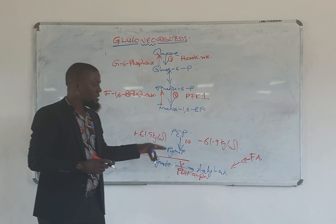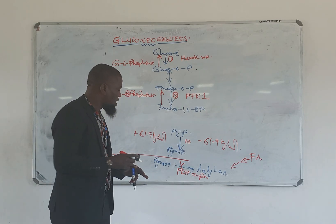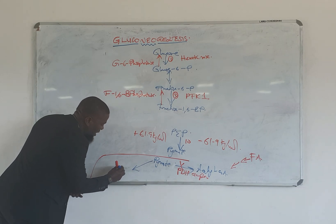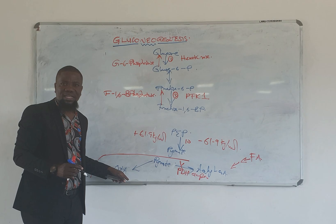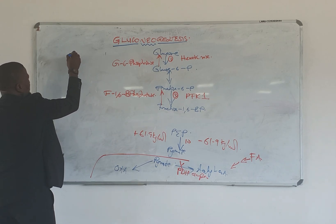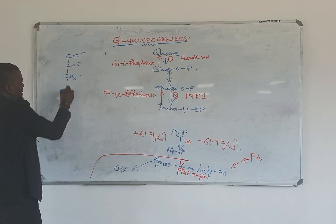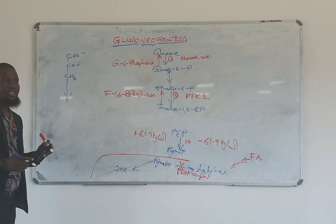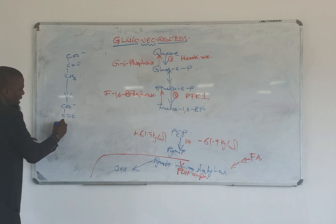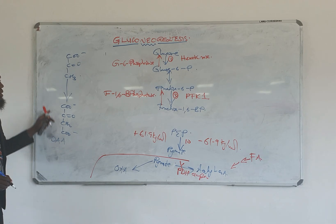The high amounts of acetyl-CoA have another effect: they will activate the enzyme which converts pyruvate into another molecule called oxaloacetate. Pyruvate is converted to oxaloacetate — a four-carbon molecule — and in this reaction, pyruvate is actually going to receive a carbon dioxide.